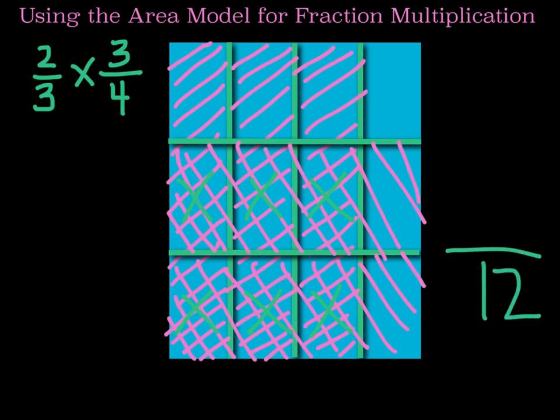The number of boxes that got shaded more than once are 6. So that is going to be our numerator, meaning that 2 thirds times 3 fourths is 6 twelfths.